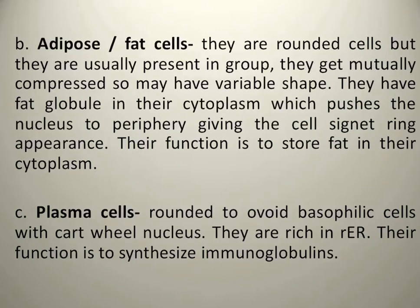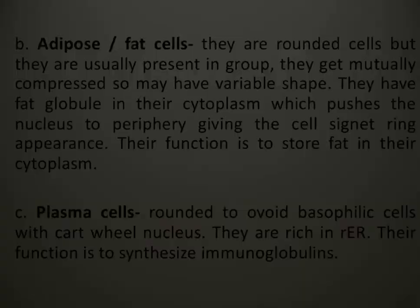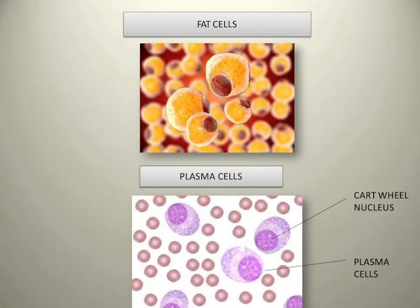Plasma cells are rounded and ovoid in shape. They contain rough endoplasmic reticulum, which means they are used for protein synthesis, and from them immunoglobulins — antibodies — are produced. You can see this diagram: fat cells have their nucleus at the periphery, and plasma cells also have an oval or rounded shape with rough endoplasmic reticulum. The nucleus of plasma cells has a cartwheel-type appearance.